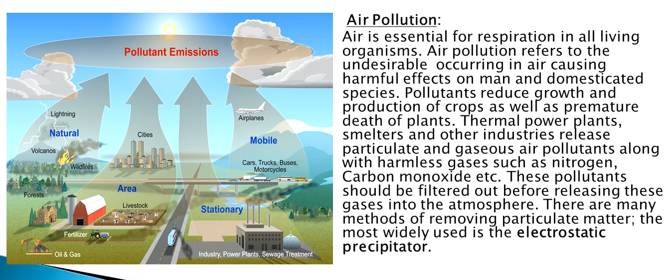Thermal power plants, smelters and other industries release particulate and gaseous air pollutants along with harmful gases such as nitrogen oxides and carbon monoxide. These pollutants should be filtered out before releasing gases into the atmosphere. The most widely used method of removing particulate matter is the electrostatic precipitator.